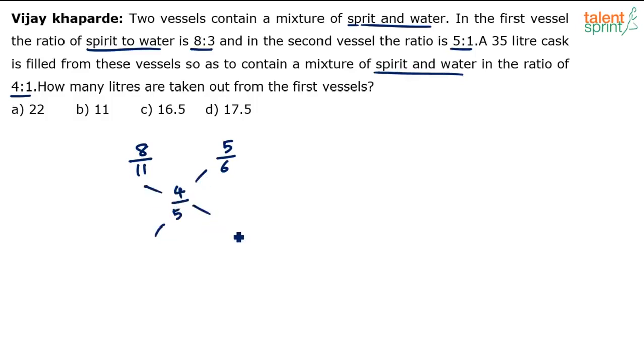Apply allegation rule to this. You will get a ratio. Divide 35 liters. See, the overall mixture quantity was 35 liters. So, divide 35 liters in the ratio that you get here. That will give you the final answer. So, it will be like 5/6 minus 4/5 which comes here and this will be 4/5 minus 8/11 that comes here. That is the ratio. Divide 35 liters in this ratio.